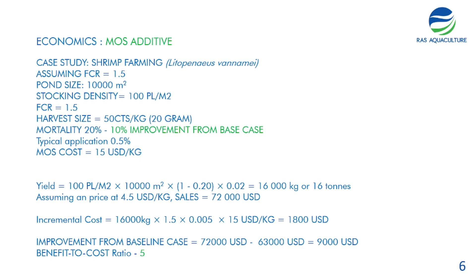By adding MOS, what tends to happen is you will see a reduction in mortality. We are assuming a 10% improvement from the base case — 30% mortality for the base case — and with the MOS additive, improving mortality to 20%. The typical application is only about 0.5%, and typical MOS costs range between $10 to $15 per kilo. Using this new mortality figure, the yield is: 100 PL per meter square × 10,000 m² × 80% survival × 20 grams = 16,000 kilograms or 16 tons. Assuming the same price of $4.50 per kilo, the sales is at $720,000.